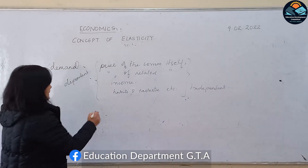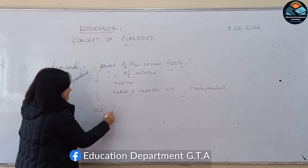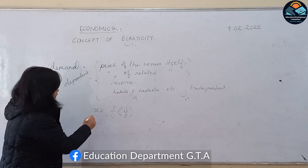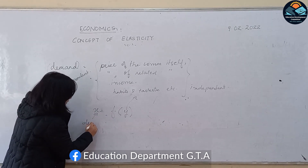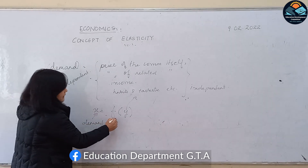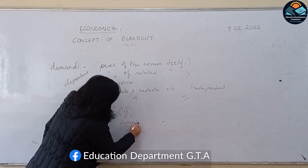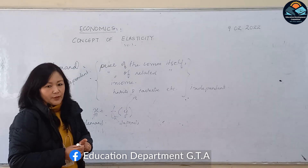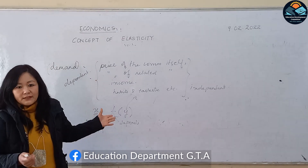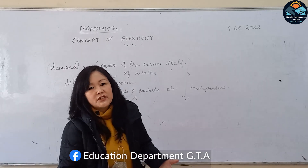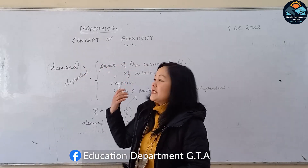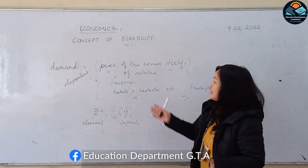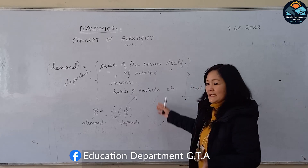We can understand clearly that if X is the demand, it depends upon Y, where Y represents all these other factors. So X being demand, we can write it algebraically: X = f(Y), where f means 'depends upon,' and Y are the factors on which demand depends. The reason I'm doing a quick recap is because it will help you understand the third chapter better.